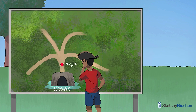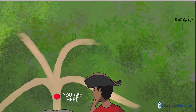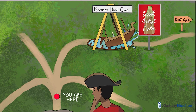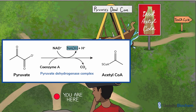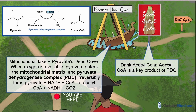Where to next? Let's take a gander at the park map. Shall he go to Pyruvate's Dead Cove? Seems like the logical choice, him being a pirate fan. Under most circumstances, pyruvate will undergo aerobic metabolism when oxygen is available. After entering the mitochondrial matrix, pyruvate dehydrogenase complex, or PDC, irreversibly turns pyruvate, NAD+, and CoA into acetyl-CoA, NADH, and carbon dioxide. We use Pyruvate's Dead Cove to represent PDC. This ride sits atop a mitochondrial lake because this step takes place in the mitochondrial matrix. The Acetyl-Cola billboard will help you remember that one of the end products is acetyl-CoA.